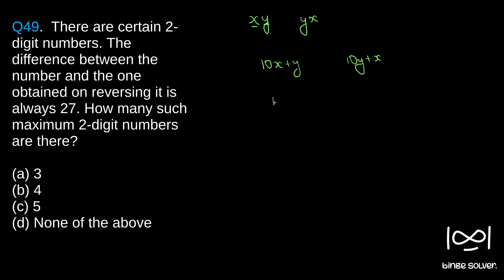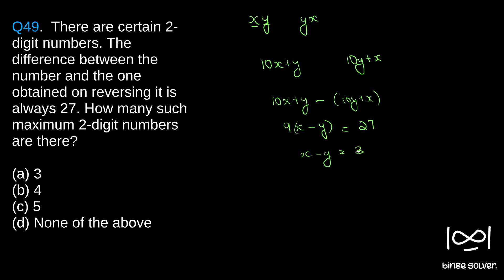Subtracting, we get (10x + y) minus (10y + x), which equals 9(x - y). Since 9(x - y) = 27, we get x - y = 3. So x minus y must always equal 3.